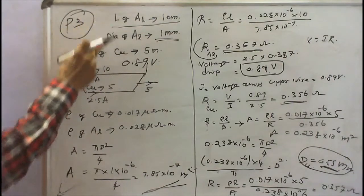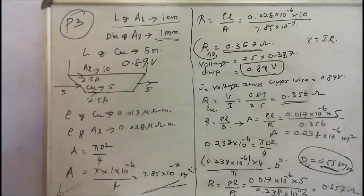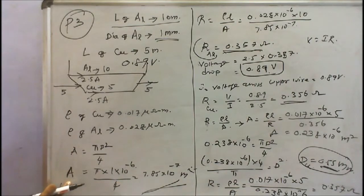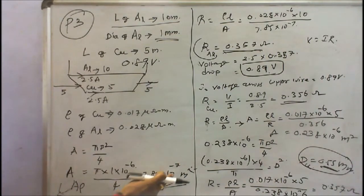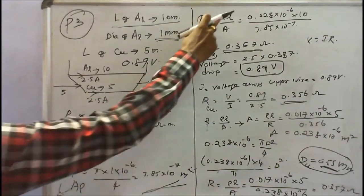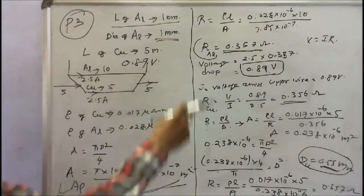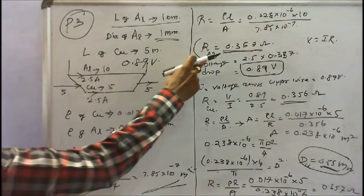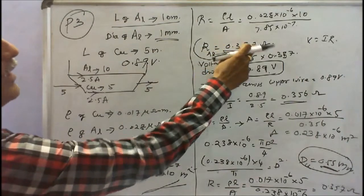Knowing the wire length and diameter of aluminium (1 mm), the cross-sectional area of the aluminium conductor is: A = π × (1 × 10⁻³)² / 4 = 7.85 × 10⁻⁷ m². Substituting rho, L, and A into R = rho × L / A, the resistance of the aluminium wire is 0.357 ohms.